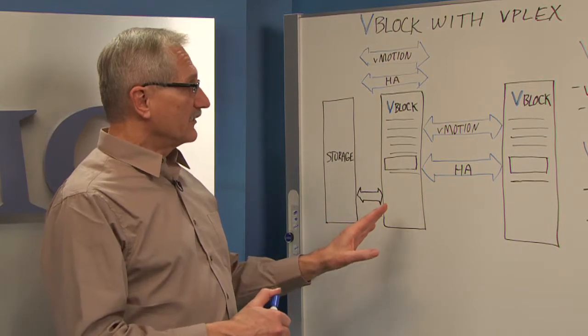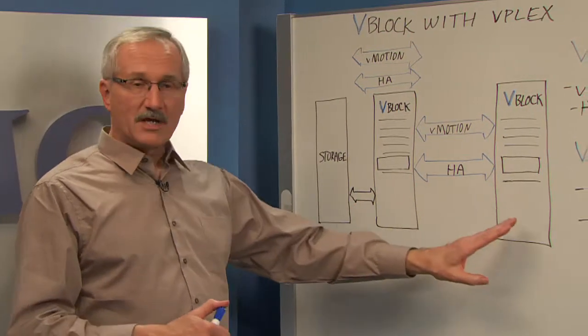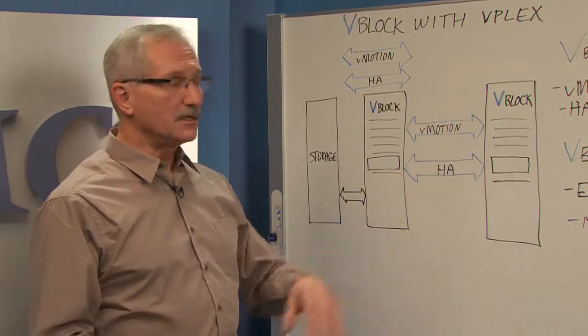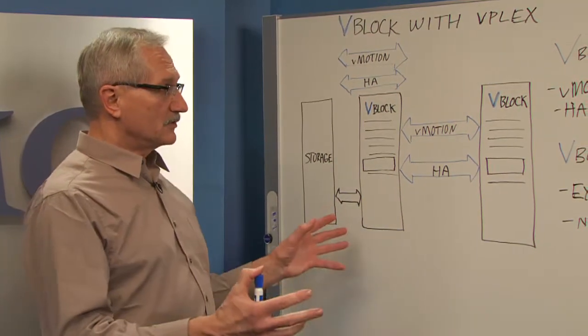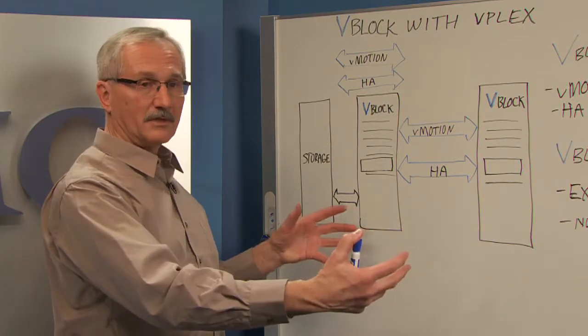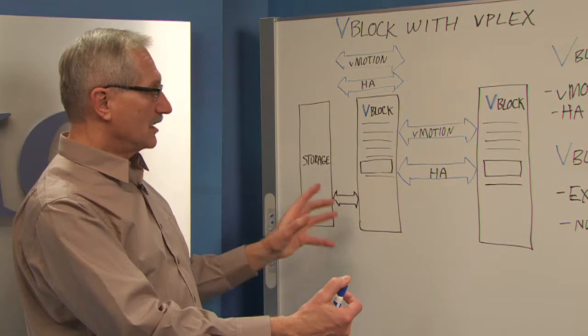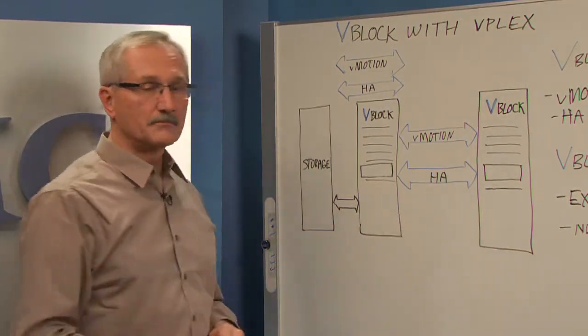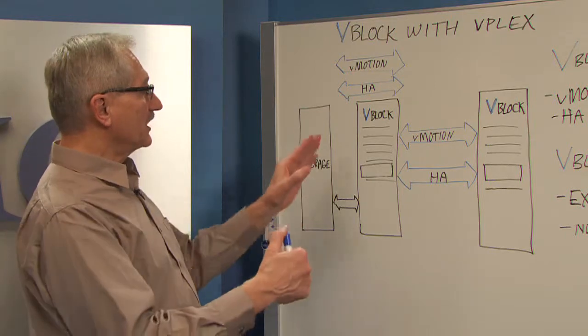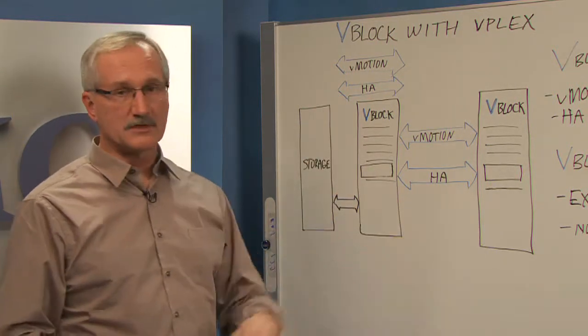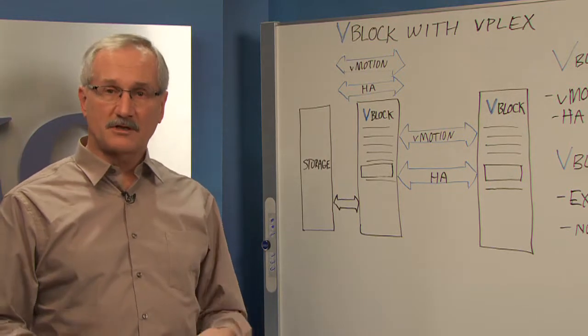Many times to get high availability, users have a second site. So if you're doing this with vBlock, you have a site here, a site here. And this gives you the idea of having two sites that are geographically a little bit dispersed. So if you have an instance, either for a storm or power outage, you have another site that's running. But you have a problem. How do I extend these capabilities of VMware across this distance? This is where vPlex comes in.